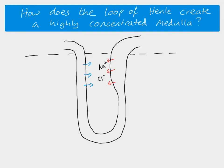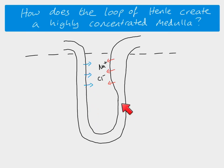An important part here is that the walls of the descending limb and the ascending limb are different. The walls of the descending limb are permeable to water, but they are almost impermeable to sodium ions and chloride ions — some sodium does actually move across, but we'll ignore that for now to keep it simpler. However, the ascending limb — this whole part — is impermeable to water. No water is able to move, and that's important because otherwise when the sodium and chloride ions move out, water would just follow. So: descending limb permeable to water; ascending limb impermeable to water.